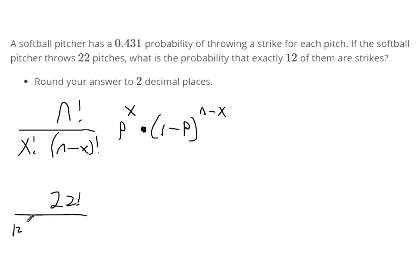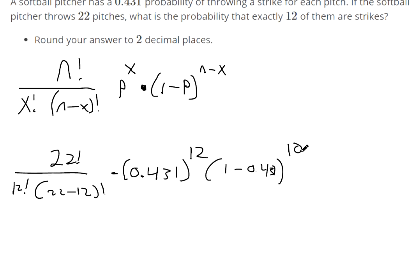The number of successes is 12, and it's 22 minus 12 factorial. Then we multiply that by the probability of a successful pitch, 0.431, raised to the power of 12 because it's 12 successful pitches. And it's 1 minus 0.431 raised to 22 minus 12, so that's 10.